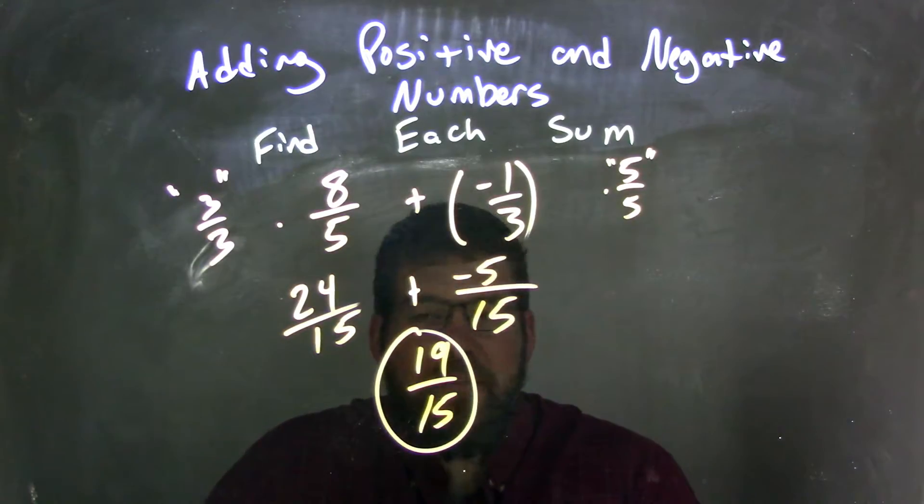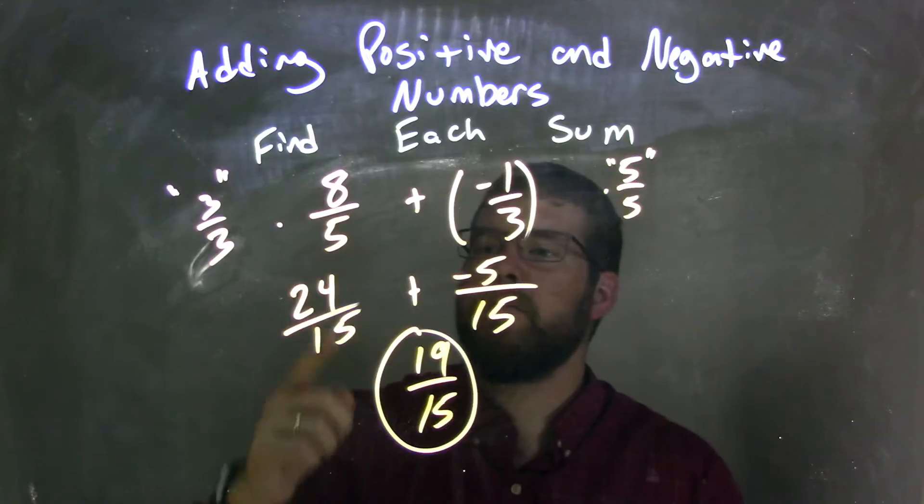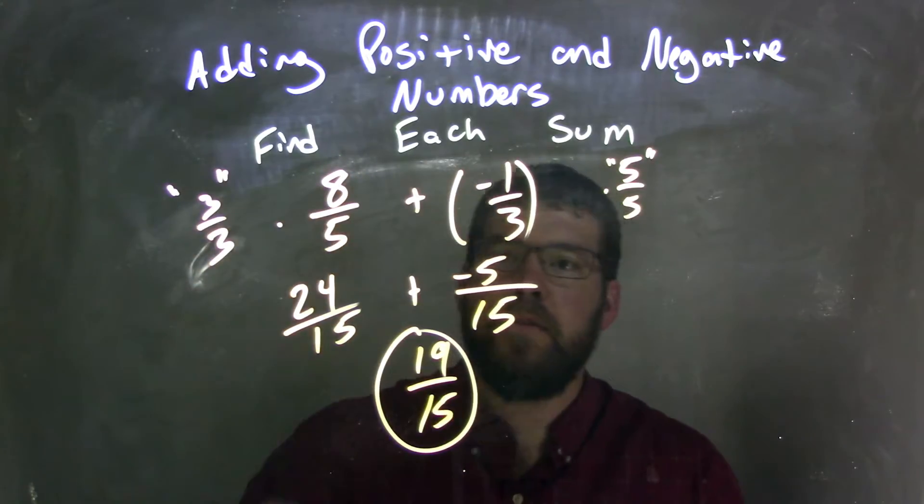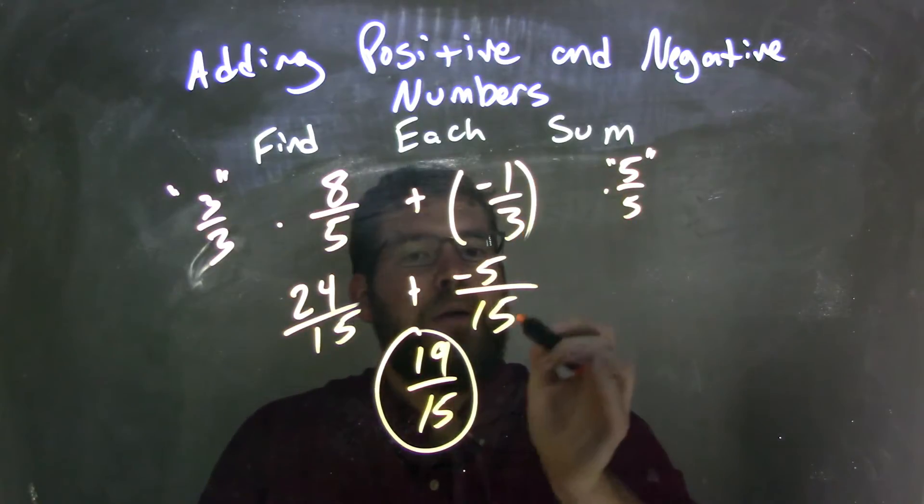And so we multiply 3 over 3, because that's essentially 1. 3 times 8 is 24, and 3 times 5 is 15. Multiply across the numerator and across the denominator. And negative 1 times 5 is negative 5, and 3 times 5 is 15.